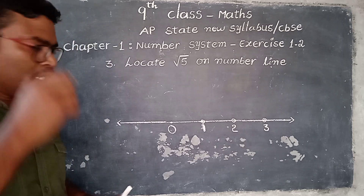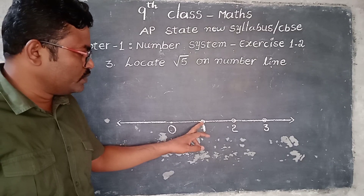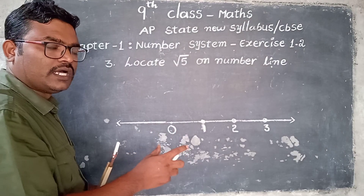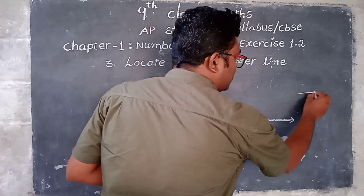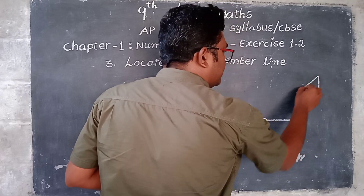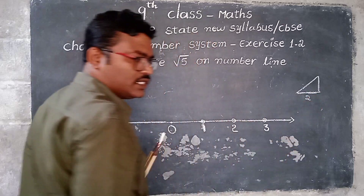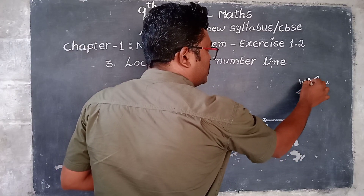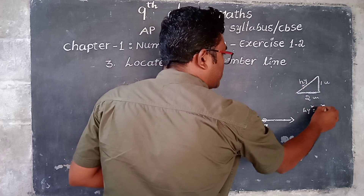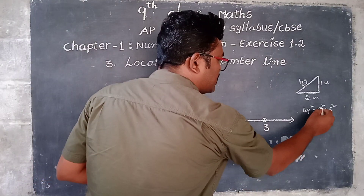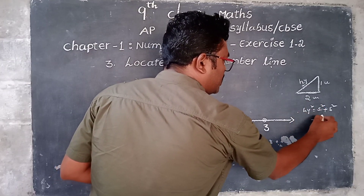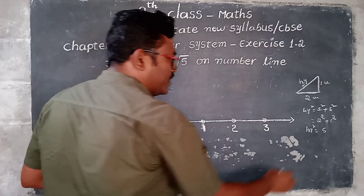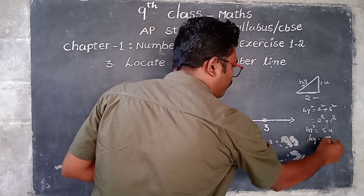To represent root 5 on the number line, first consider a right angle triangle where one side is 2 units and another side is 1 unit. As per Pythagoras theorem, hypotenuse squared equals side squared plus side squared. So hypotenuse squared equals 2 squared plus 1 squared, which is 4 plus 1 equals 5. So hypotenuse squared is 5 units, and therefore the hypotenuse is root 5 units.